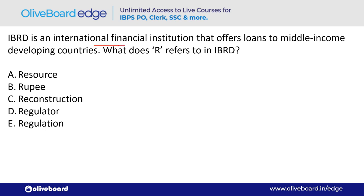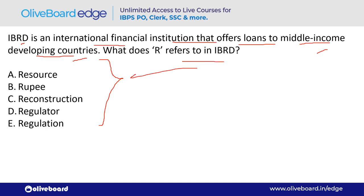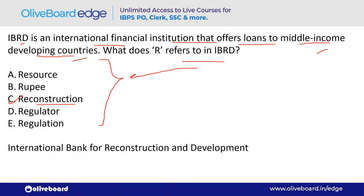IBRD is an international financial institution that offers loans to middle-income developing countries. IBRD is an arm of the World Bank. What does 'R' stand for in IBRD? R is Reconstruction. The full form is International Bank for Reconstruction and Development.